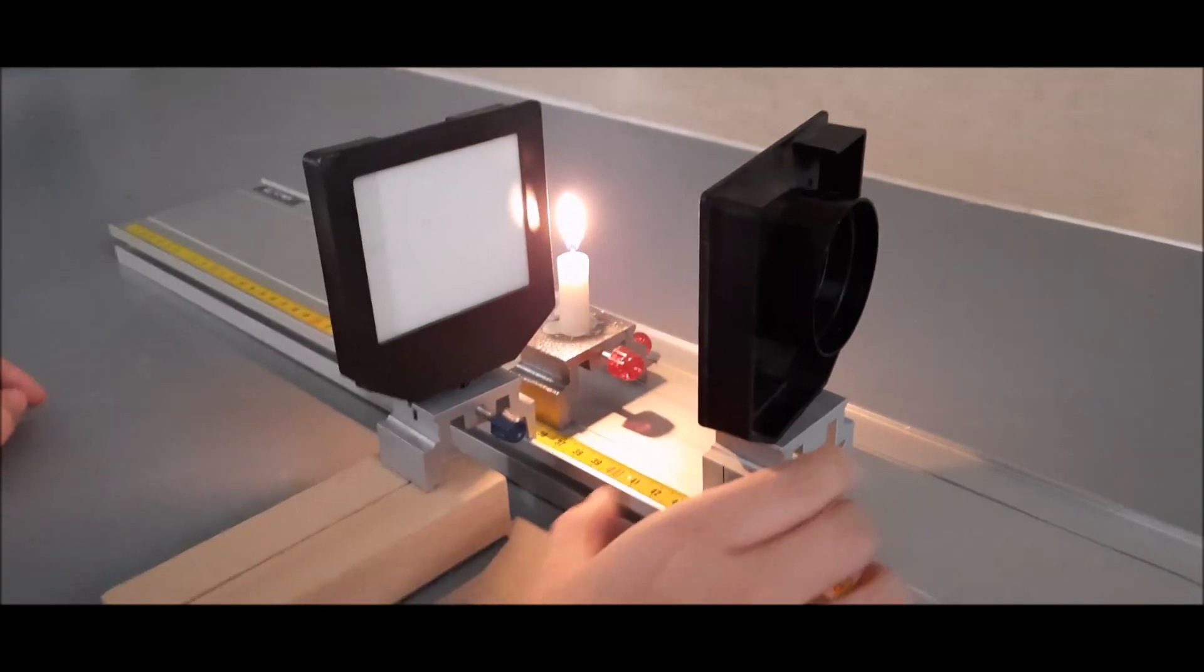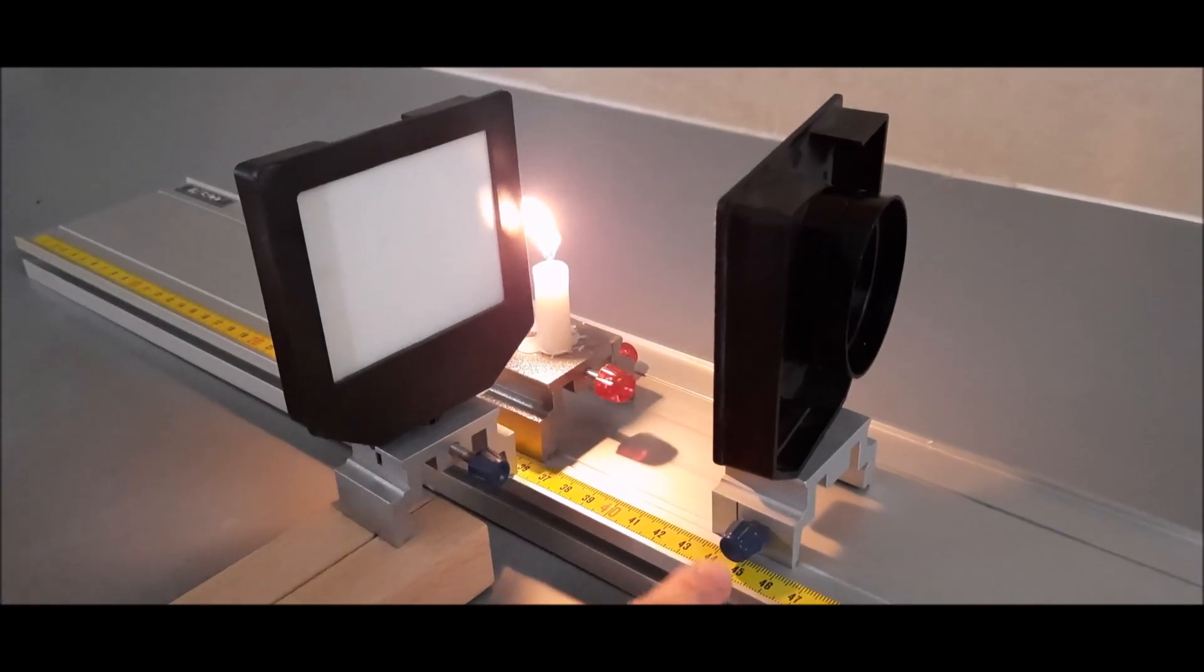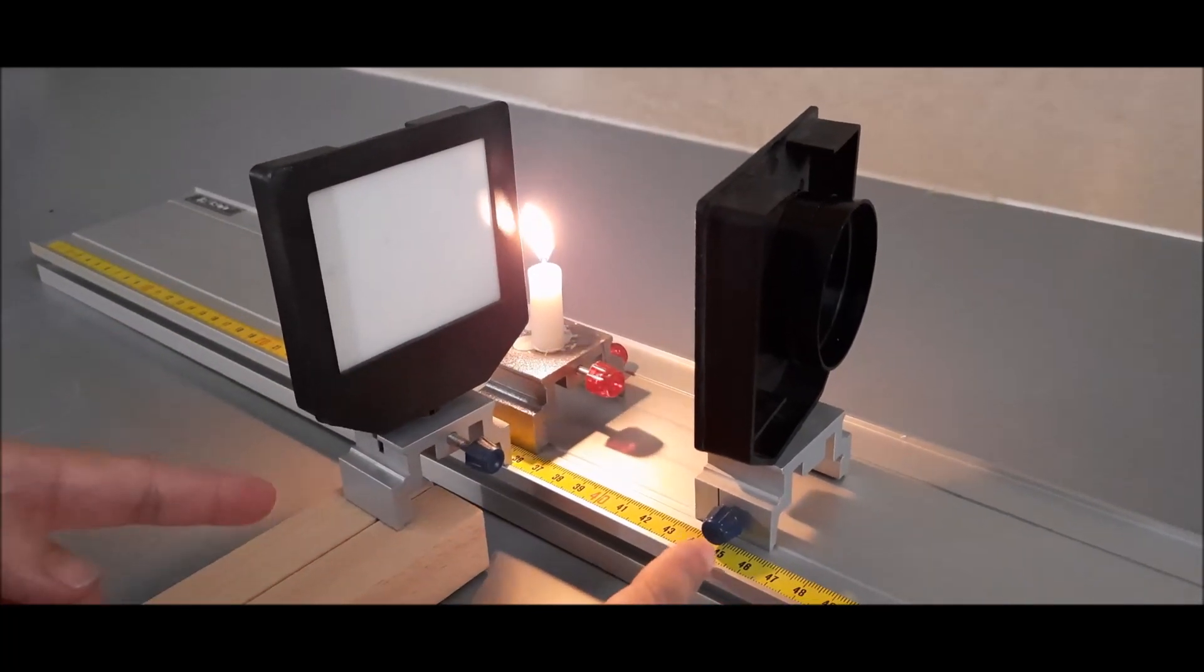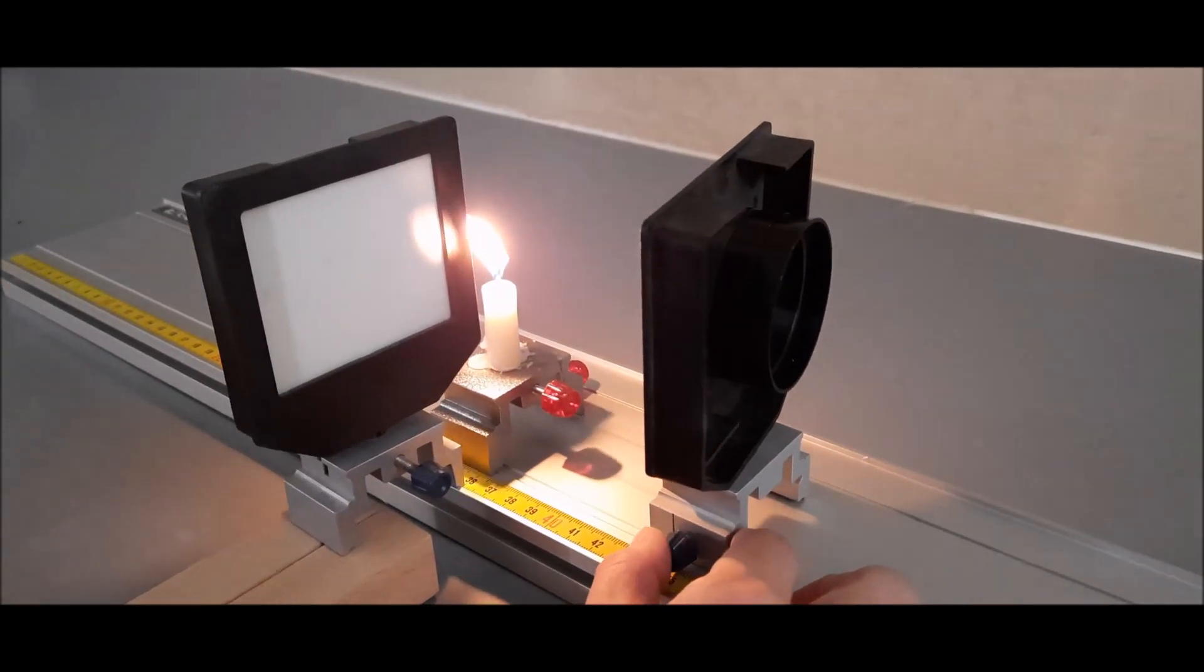It stops at 45 cm mark. Therefore, the center of curvature is measured as 45 minus 35, that is 10 cm, divided by 2 for the focal length, that is 5 cm.